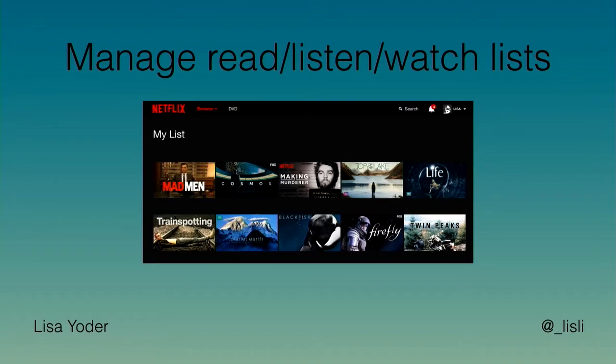You can also manage your read, listen, and watch lists. I have a Goodreads account, but I never log in — there are books in there from 2008 that I just never update or look at. And whenever I'm watching Netflix, I'm usually using an Apple TV, and does anybody else have trouble finding their 'My List' thing in Netflix? It's really hard. This could be a really great way to keep track of that and sync it with a partner or somebody that you want to watch things with.